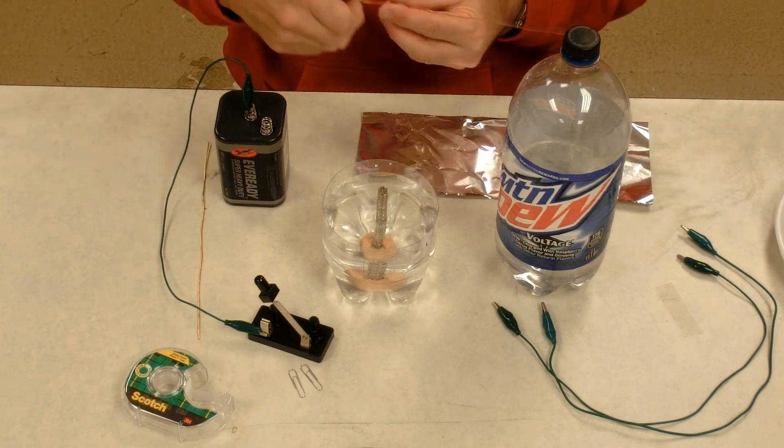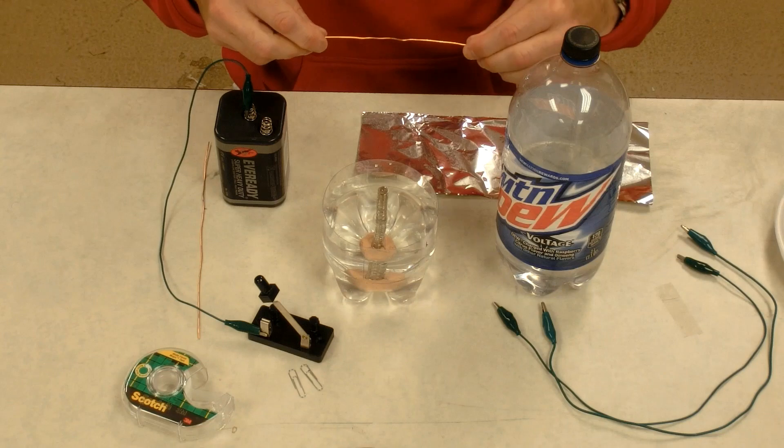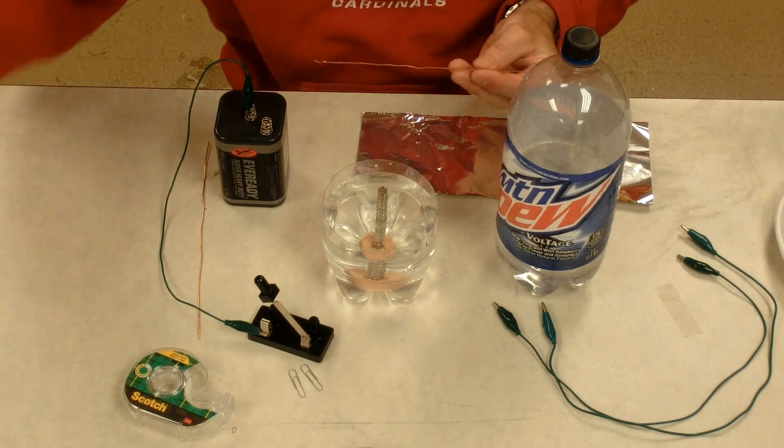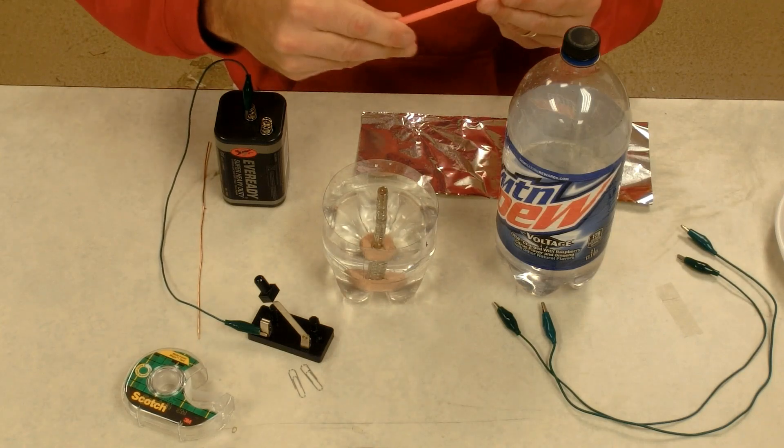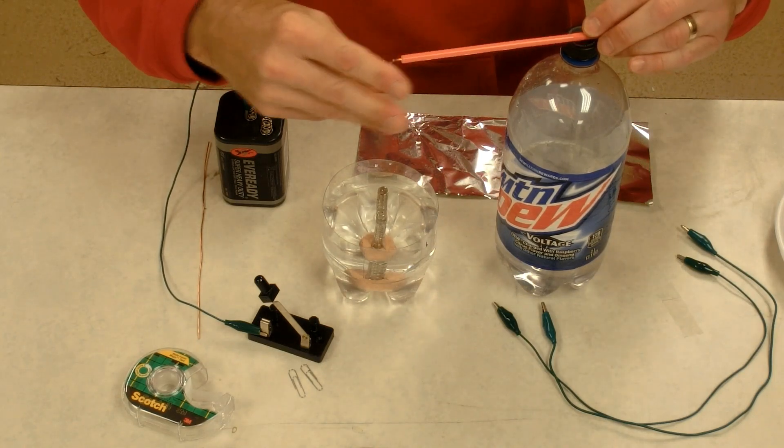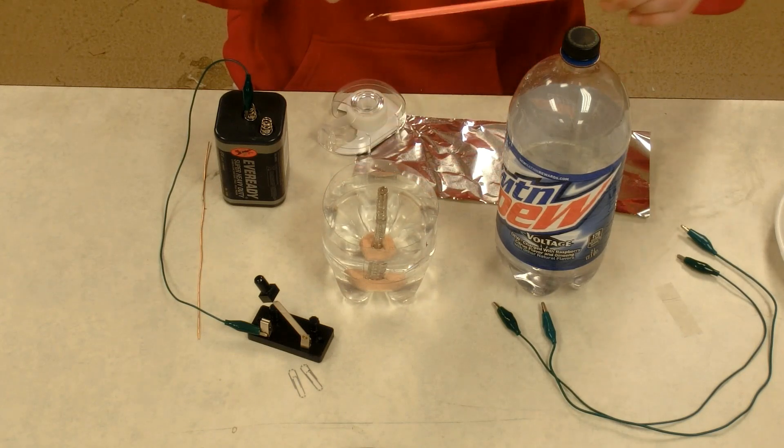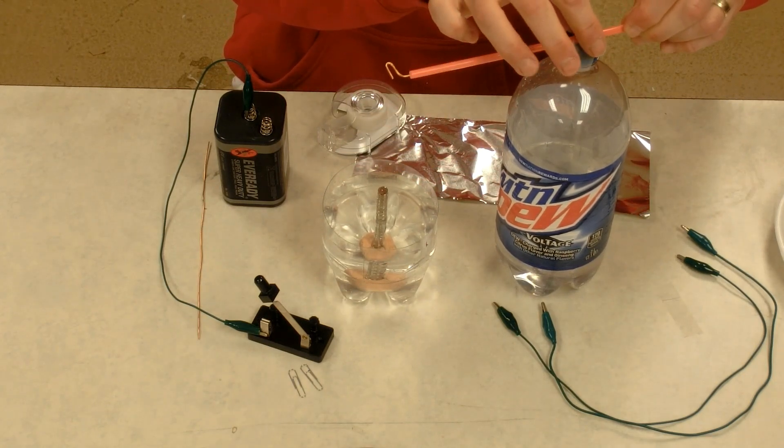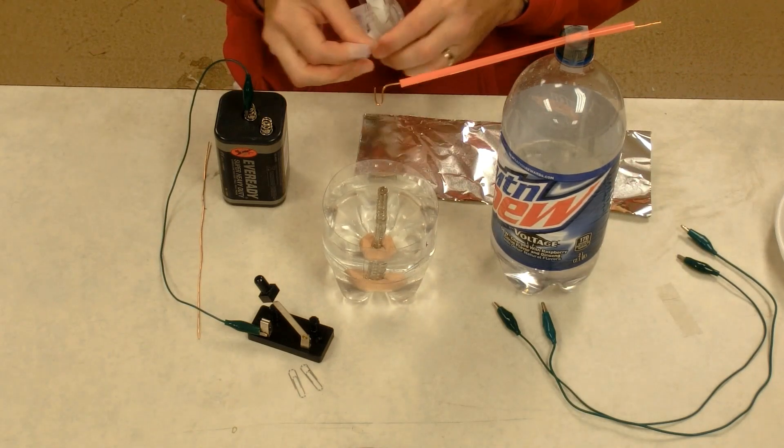I'm going to use a stiff copper wire and bend a little hook in it, and I'm going to set it inside of a straw to help support it, and I'm going to tape it to the top of my 2-liter bottle. This will help hold it up and keep it in place.